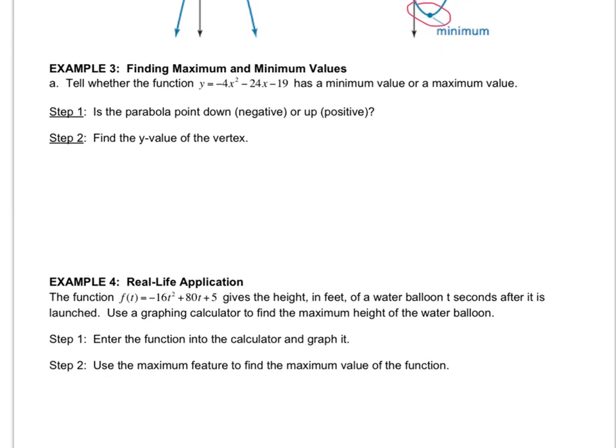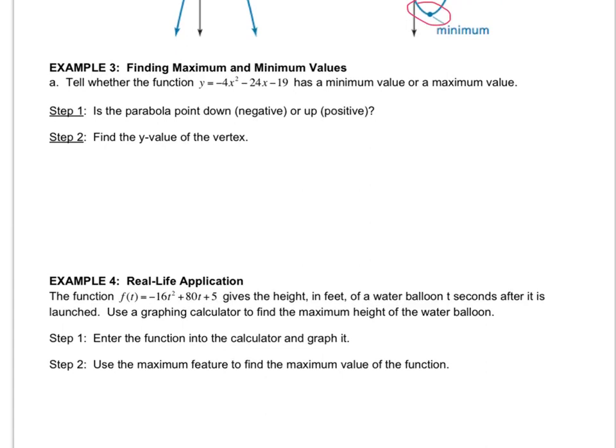So we have to tell whether a function has a minimum or a maximum. Well, if the a value, the coefficient of x squared, is negative, then the parabola points down, and so the vertex ends up being a maximum. And now we go through the same steps that we did before to actually find the vertex.